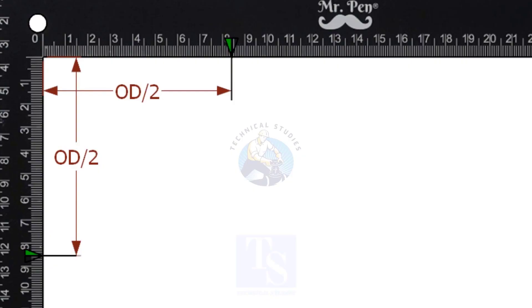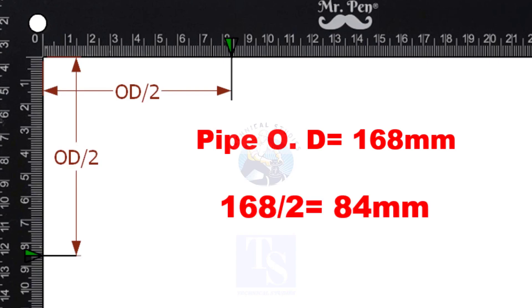This is a 6-inch pipe. OD of a 6-inch pipe is 168mm, so I marked 84mm on the right angle.